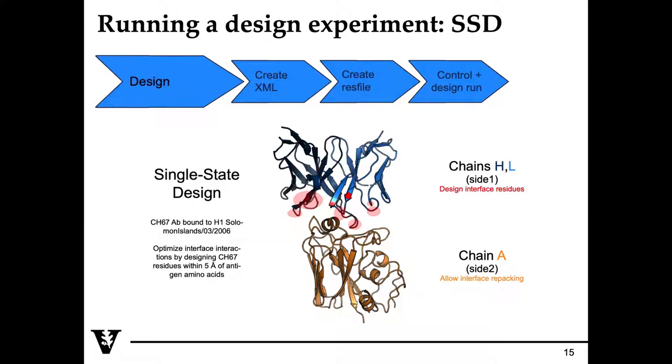For today, the first tutorial we're going through is single-state design. During this particular design experiment, what we have is a fragment antibody in both the heavy and light chain, shown in dark and light blue. What we're interested in designing is the residues within the fab that are within five angstroms of the binding interface of our antigen. I've highlighted here in red these residues that are defined as the interface residues.